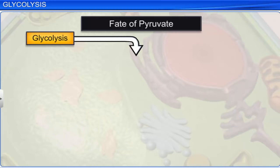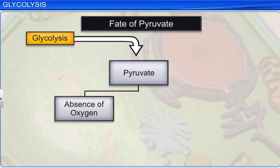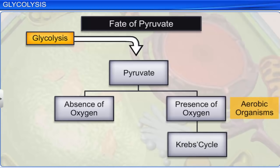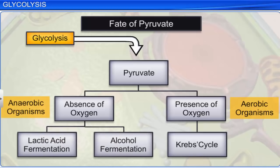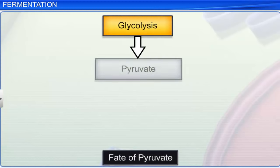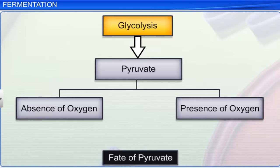The key product of glycolysis is pyruvate. It can be utilized in different ways based on the availability of oxygen. In the presence of oxygen, it is utilized by aerobic organisms in Krebs cycle for complete oxidation. In the absence of oxygen, it is utilized by anaerobic organisms in lactic acid or alcohol fermentation. In a plant cell, glycolysis leads to the formation of pyruvic acid or pyruvate, which is broken down based on the availability of oxygen. In the absence of oxygen, the cell undergoes fermentation.